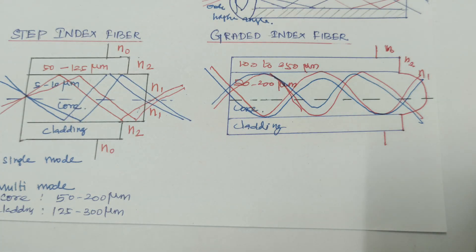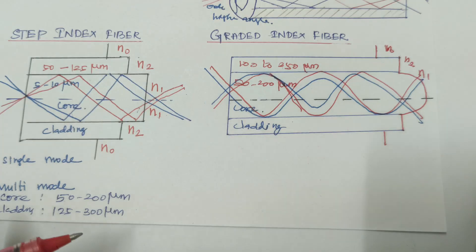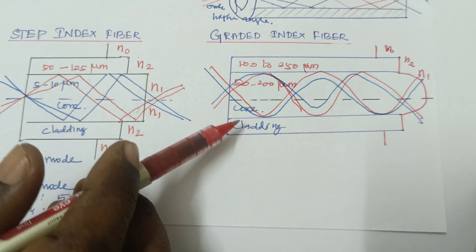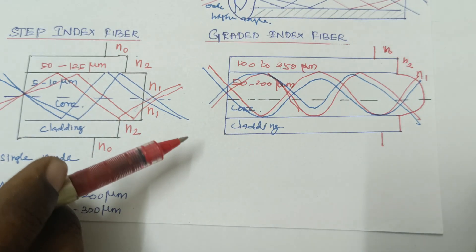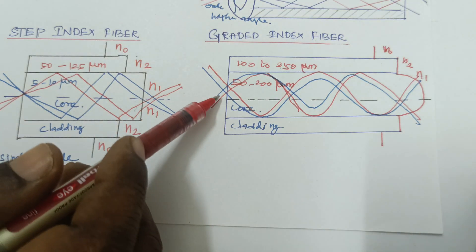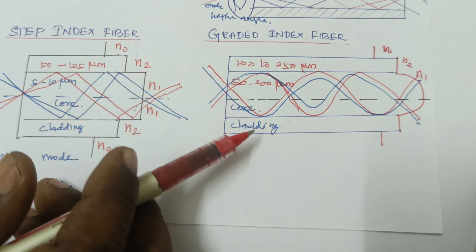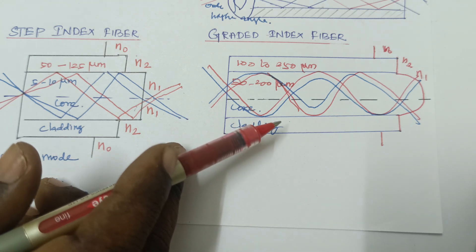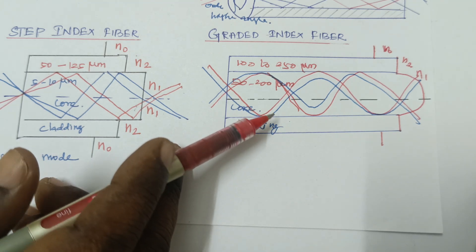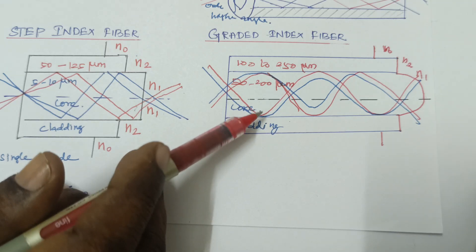This is the multimode graded index fiber. Characteristics of multimode graded index fiber: it has a small numerical aperture and intermediate bandwidth. It has low attenuation, meaning low losses. The light source can be either LED or laser diodes. Advantages: intermodal dispersion is reduced with this type of fiber. It is a high-quality fiber and has good, high bandwidth.